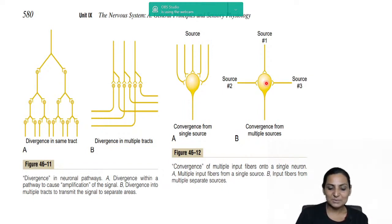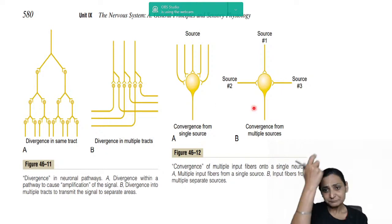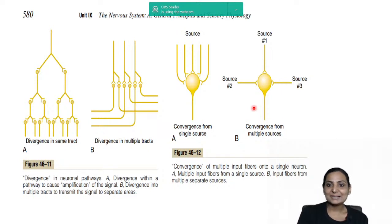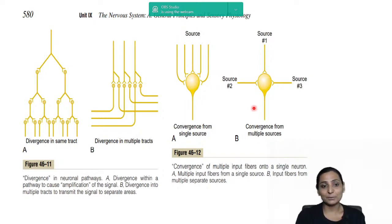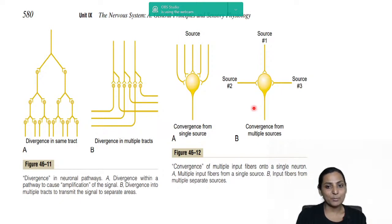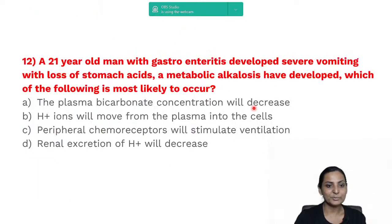Divergence: the pain pathway gives collaterals to the thalamus, cortex, reticular activating system, and periaqueductal gray matter — a single pathway is magnified when diverging. Convergence and divergence are very important properties of synapses.